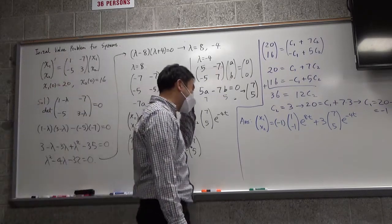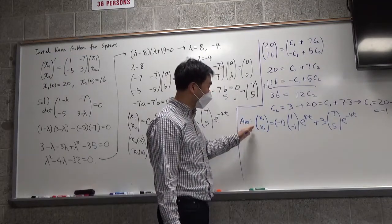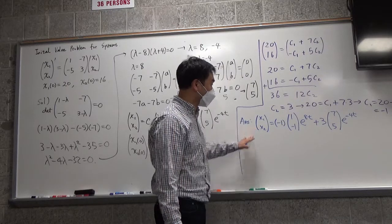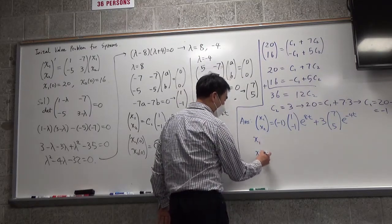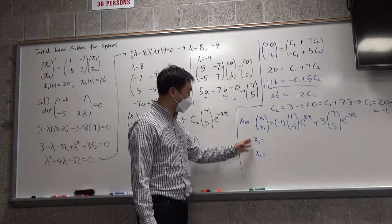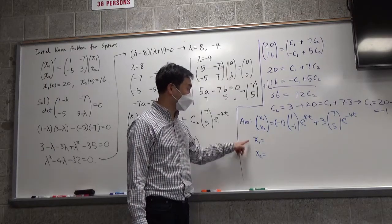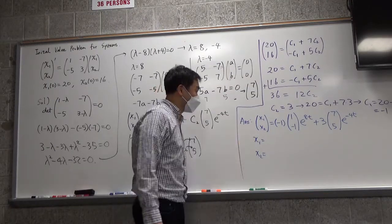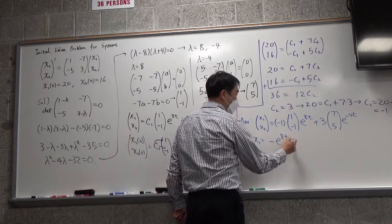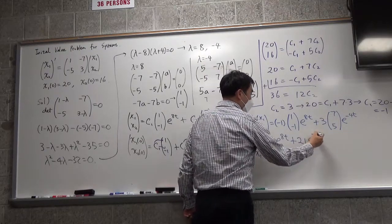However, depending on the question, they might accept this one. Even for web work questions, even for online homework, sometimes they would accept this one, but more likely they're going to ask what X1 is equal to and X2 is equal to. So if you don't know what X1 and X2 are as functions, what good is it to have this solution? So you have to be able to read off the X1 and X2. So what is X1? Can you tell me? Negative e to the 8t. Negative 1 times 1, which is negative, e to the 8t, plus 3 times 7, or 21, which is 21 e to the negative 4t.